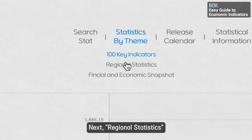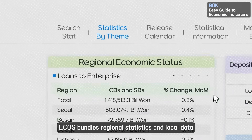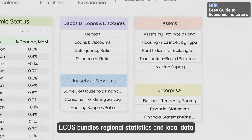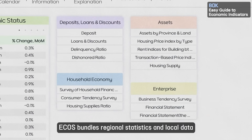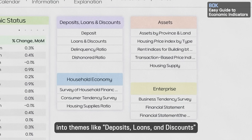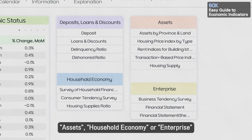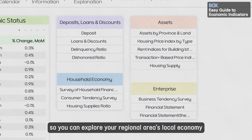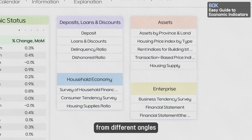Next, Regional Statistics. ECOS bundles regional statistics and local data into themes like deposits, loans and discounts, assets, household economy, or enterprise — so you can explore your regional area's local economy from different angles.